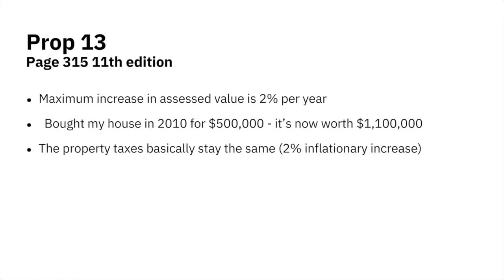For example, let's say I bought my house in 2010 for $500,000. It's now worth $1.1 million. The property taxes basically stay the same — you have a 2% inflationary increase. The law says the maximum increase in the assessed value is only 2% per year. So you could drive down a street in Beverly Hills where all the houses are worth $5 to $6 million, and one person might be paying taxes like the house was worth a million because they bought it 32 years ago.